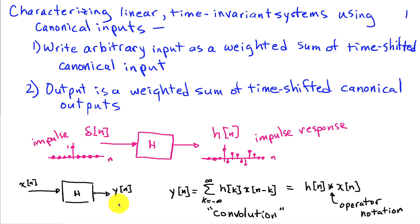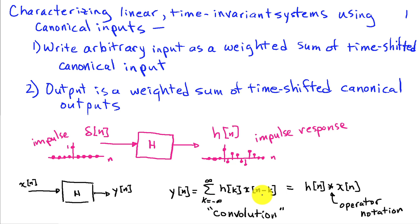One way to write this: I have an input x of n and an output y of n, and the output y of n can be expressed as the sum from k equals minus infinity to infinity of h of k times x of n minus k. This operation, this infinite sum, is known as the convolution sum. We can denote that in operator form using an asterisk between two signals, meaning h of n convolved with x of n, which implies this particular form for the summation.